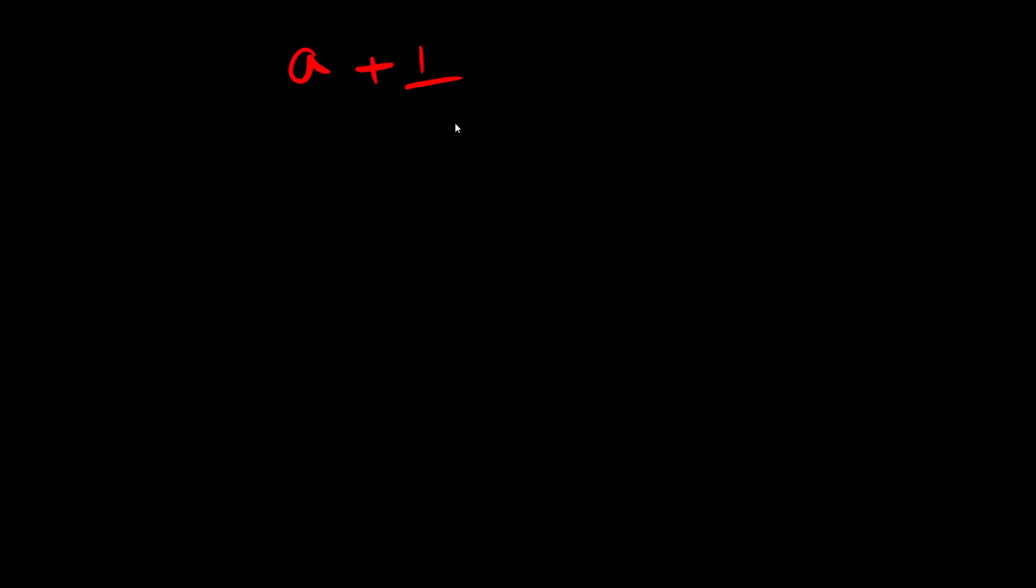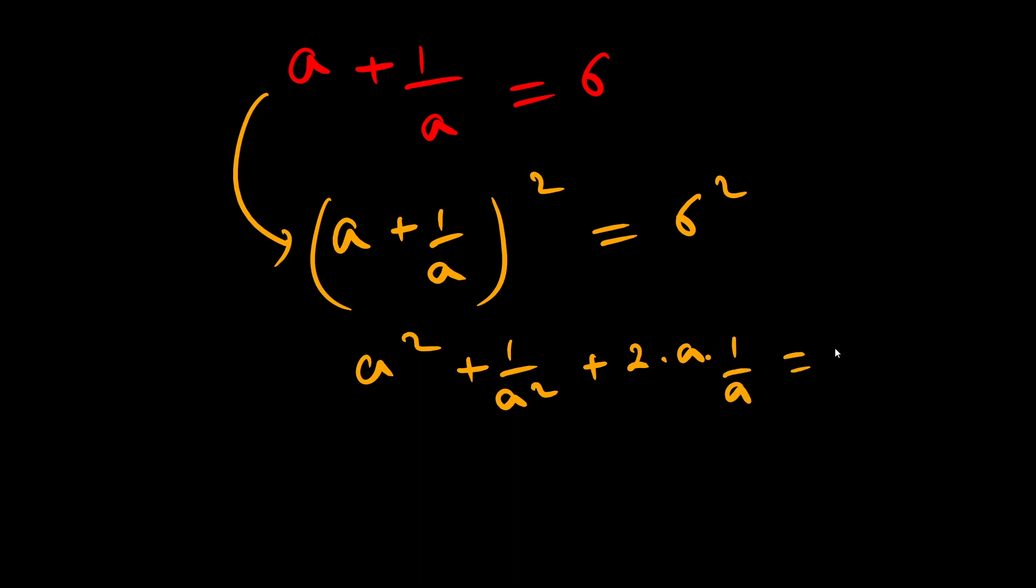a plus 1 by a equal to 6. And what I will do is I will square both sides. So a plus 1 by a whole square equal to 6 square. a square plus 1 by a square plus 2 a times 1 by a equal to 36. This will be cancelled out. So from here I will get a square plus 1 by a square equal to 34. 36 minus 2 is 34.